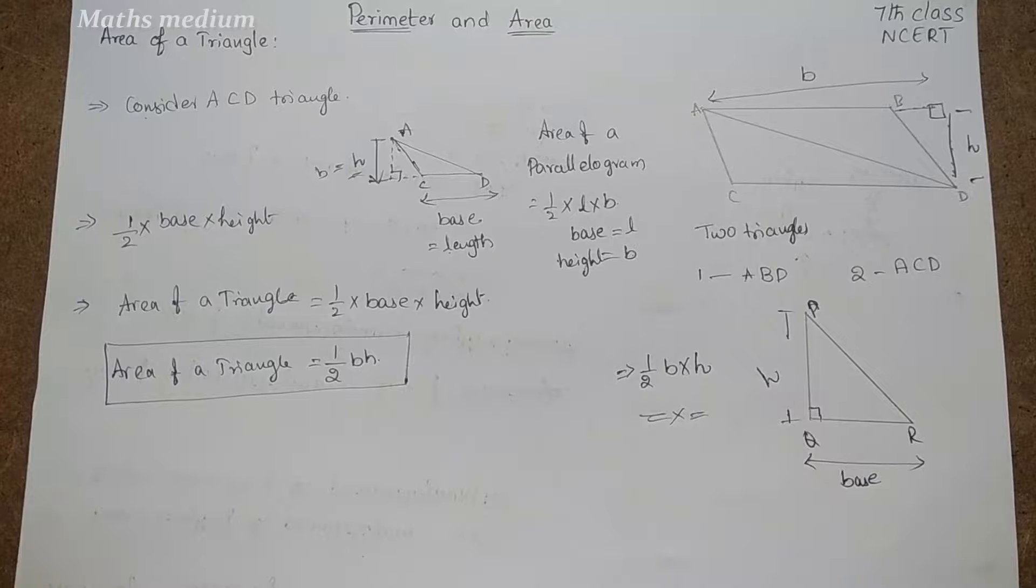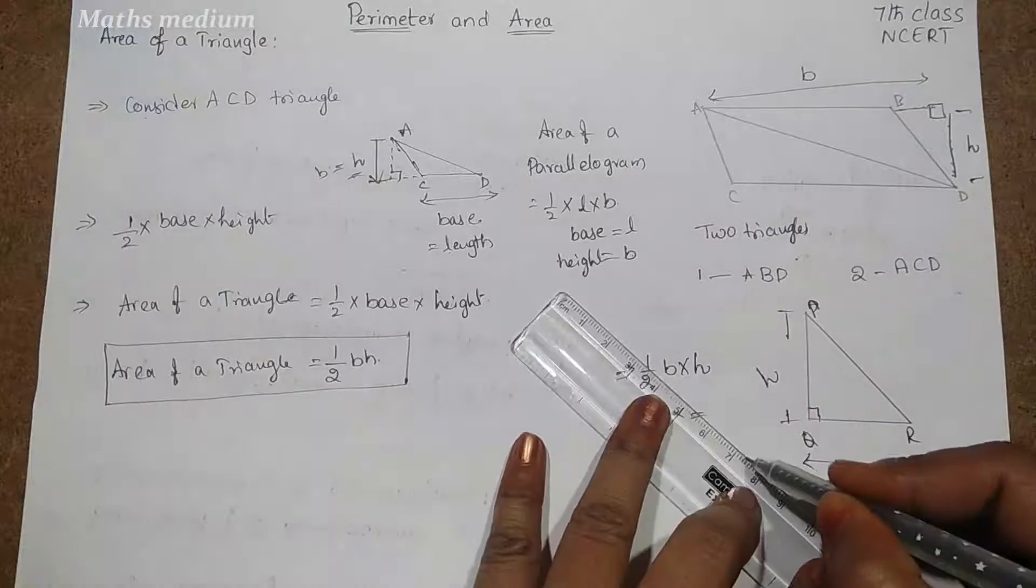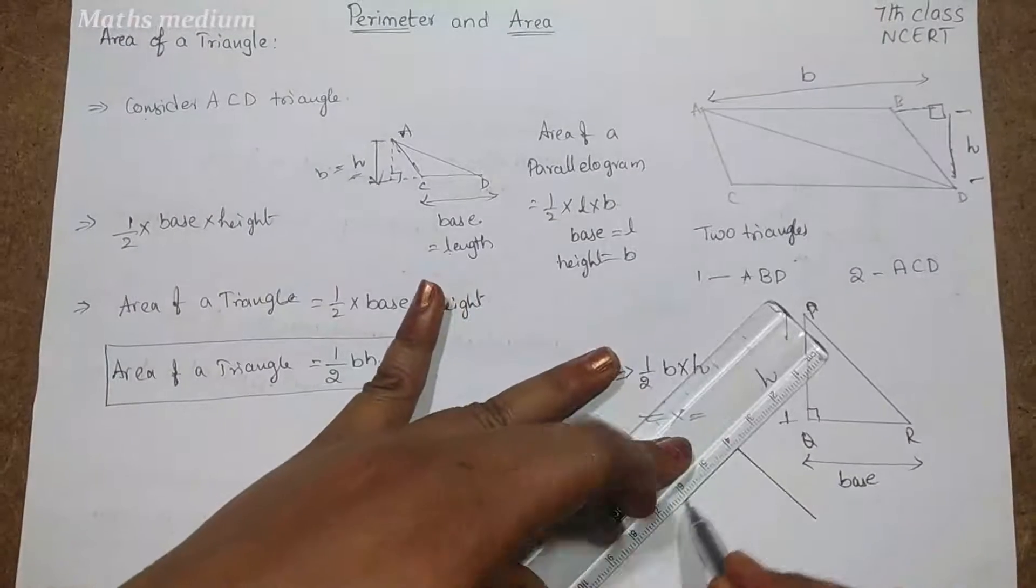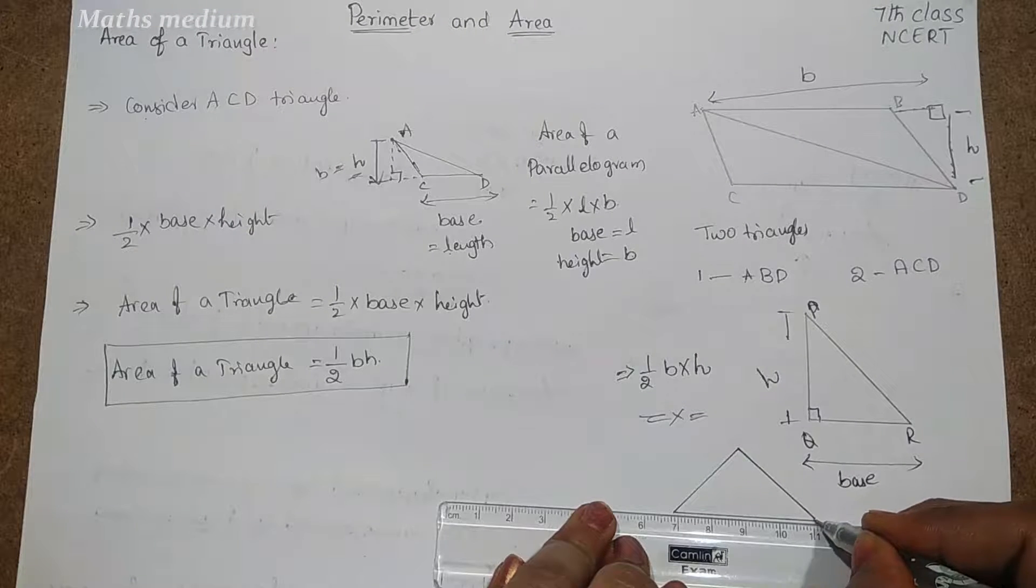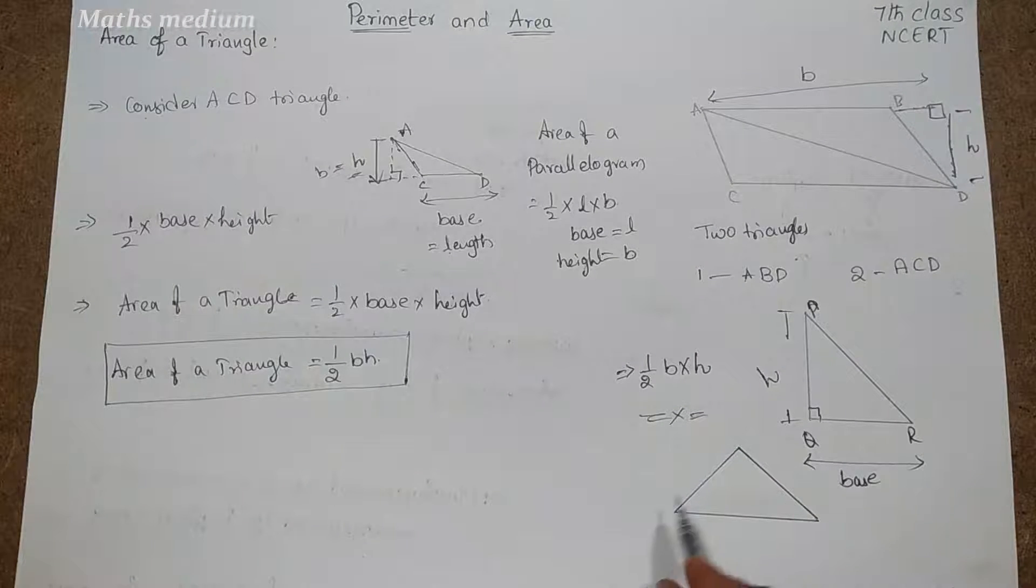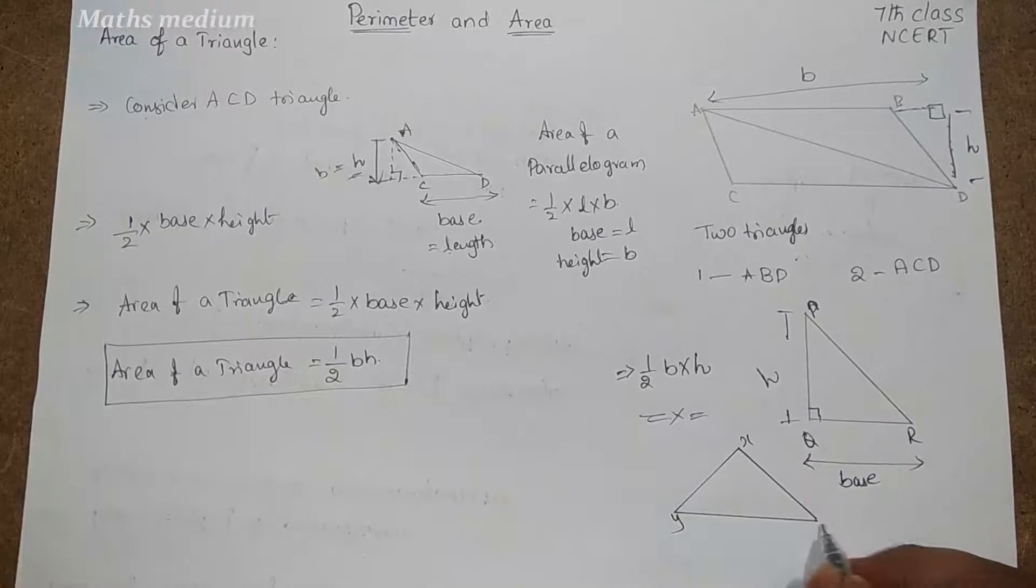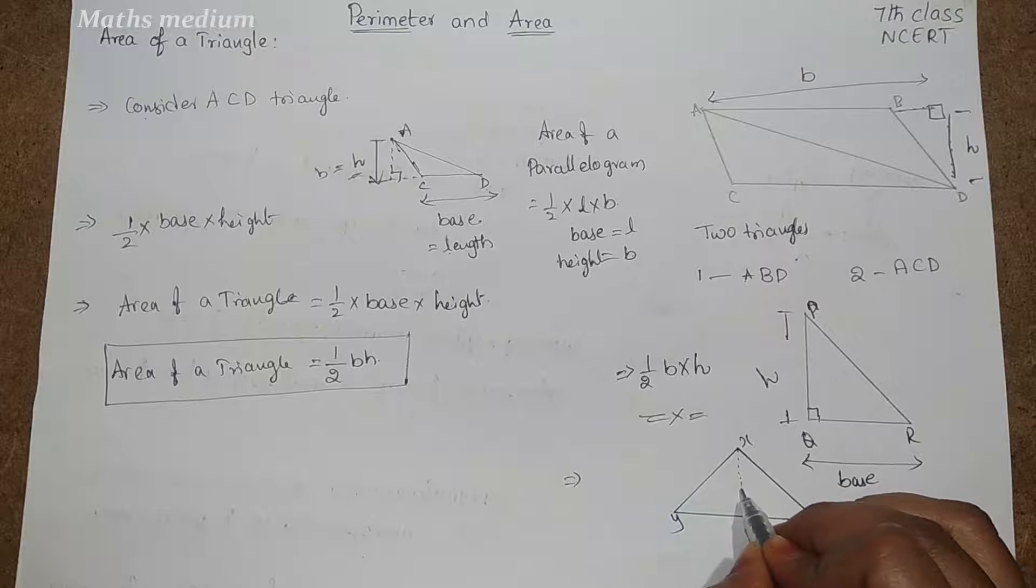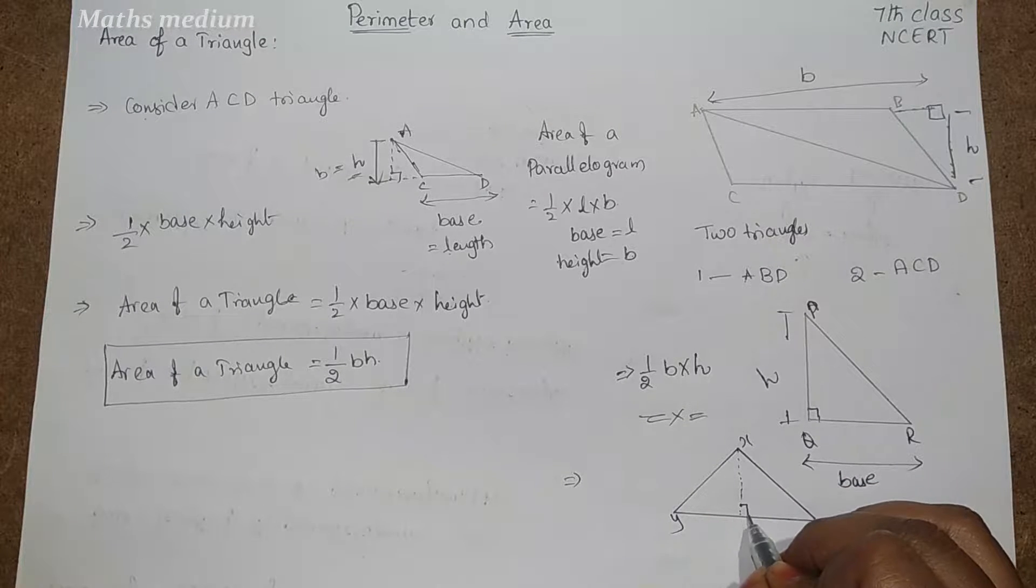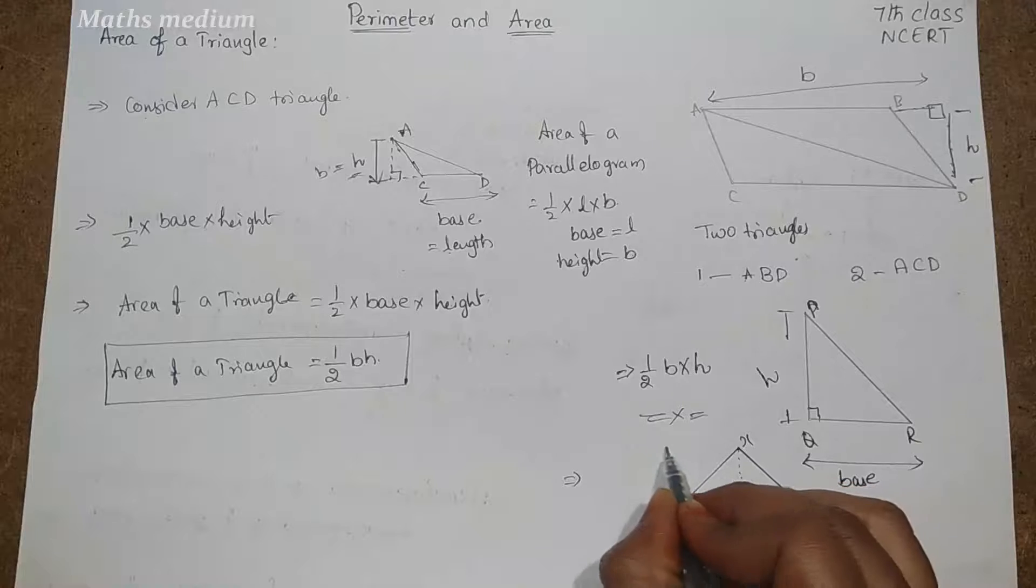If in case there is another type of triangle like this, see this is scalene triangle. How we are going to take XYZ? Now we have to take from this midpoint to this, we have to take perpendicular bisector as the height of the triangle. So this is called height.